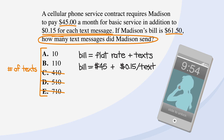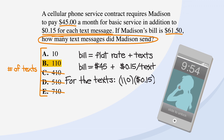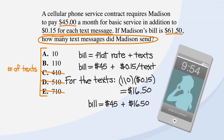So let's move on to answer choice B, which says that Madison sent 110 text messages. If she did, then she would pay 110 times 15 cents, or $16.50 for those texts. If we add in our flat rate of $45, we get that her bill is $45 plus $16.50, or $61.50. Since this matches our target bill of $61.50, we can circle answer choice B.